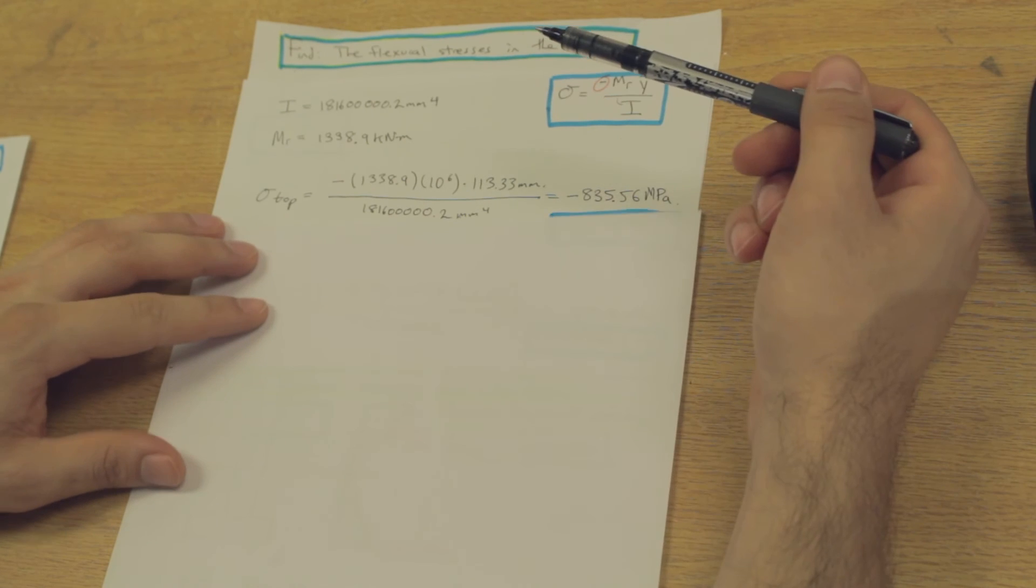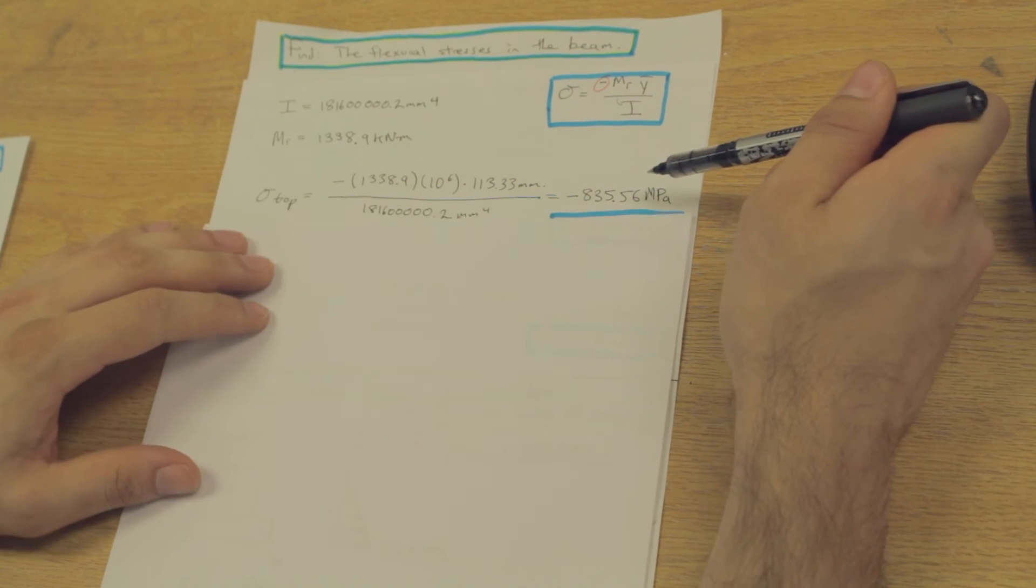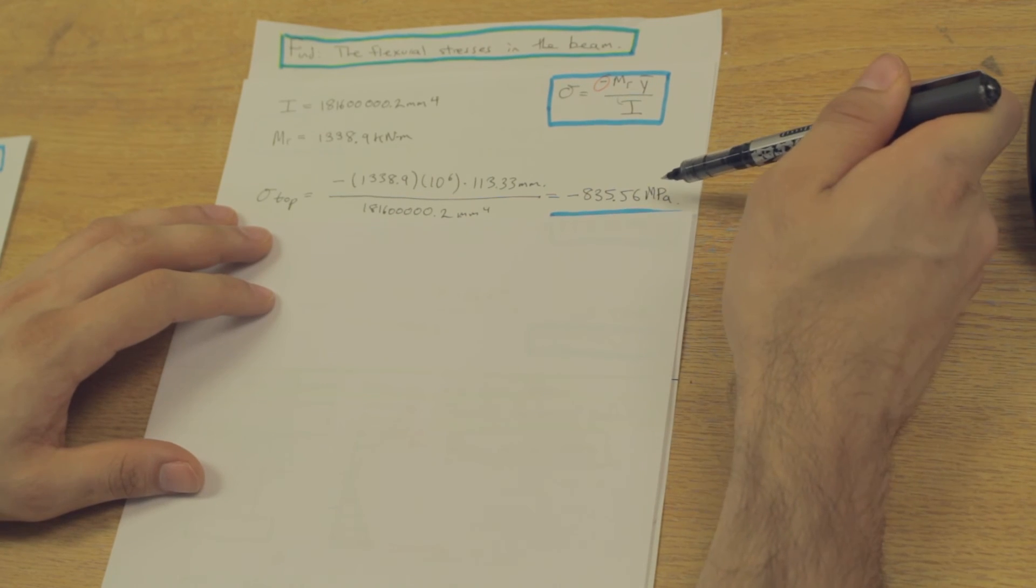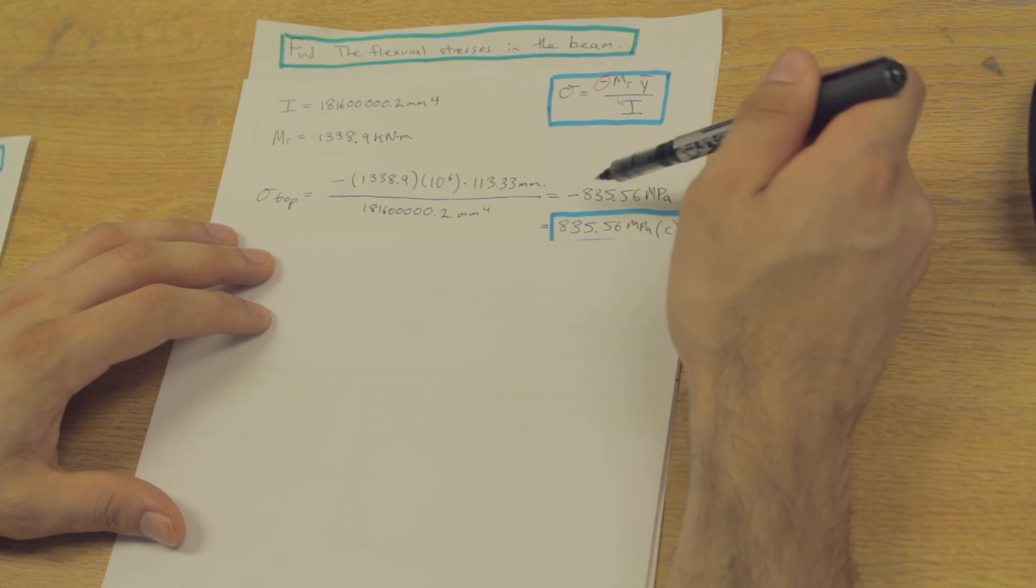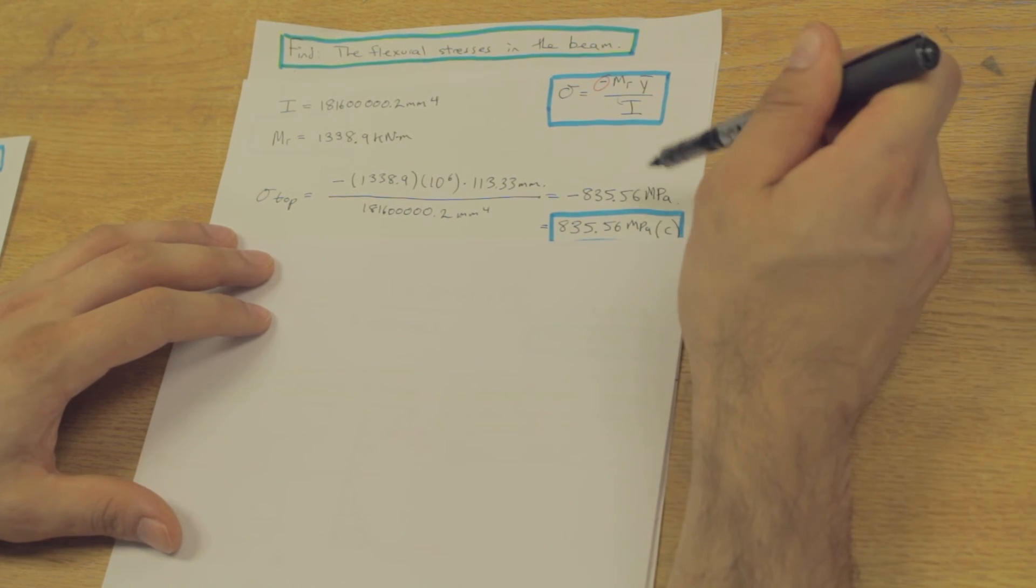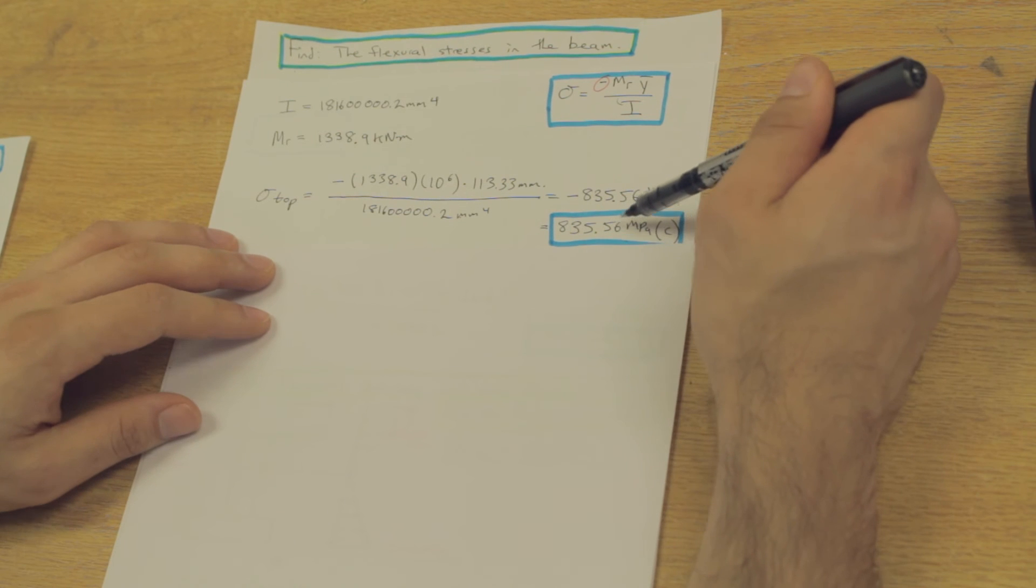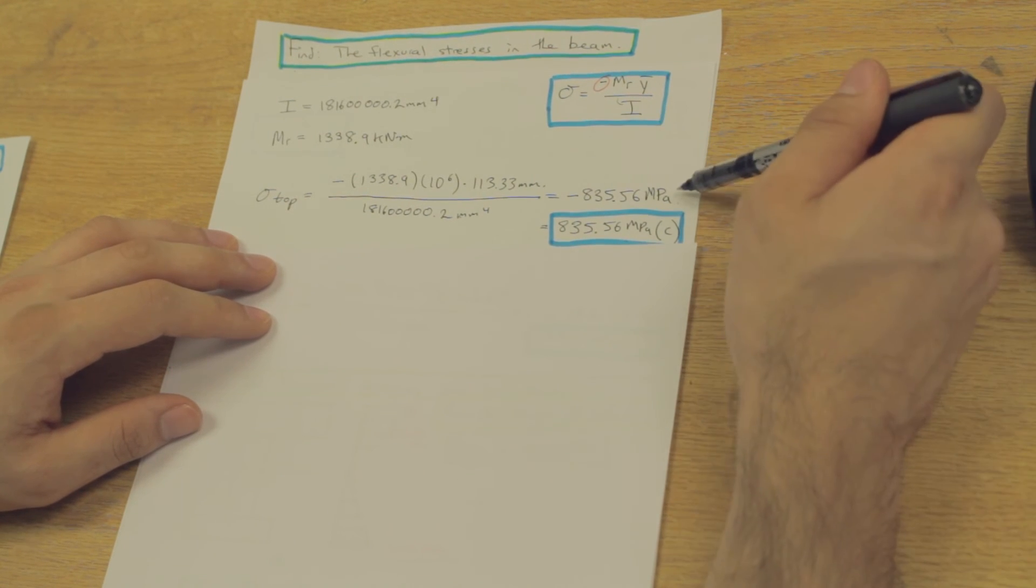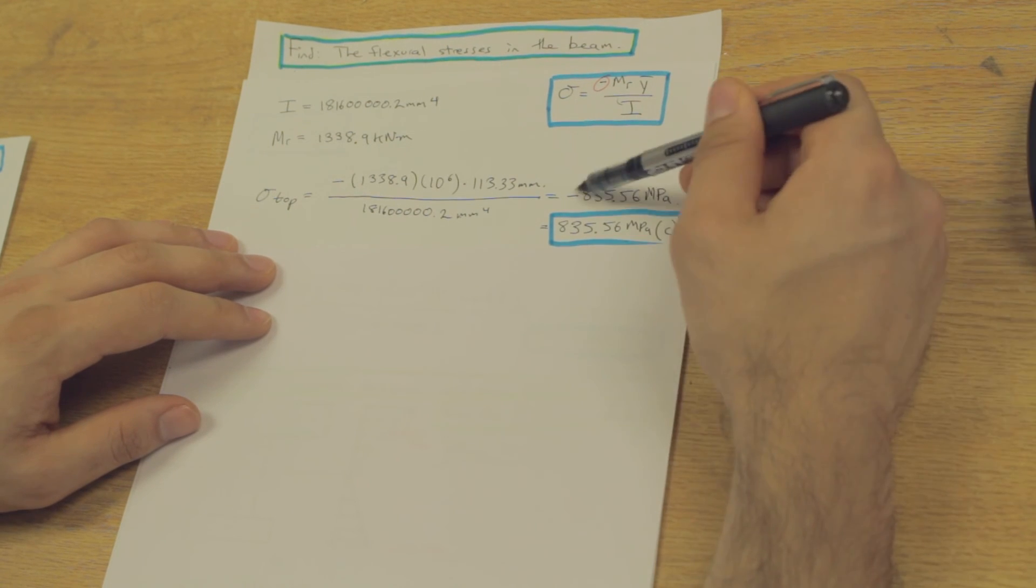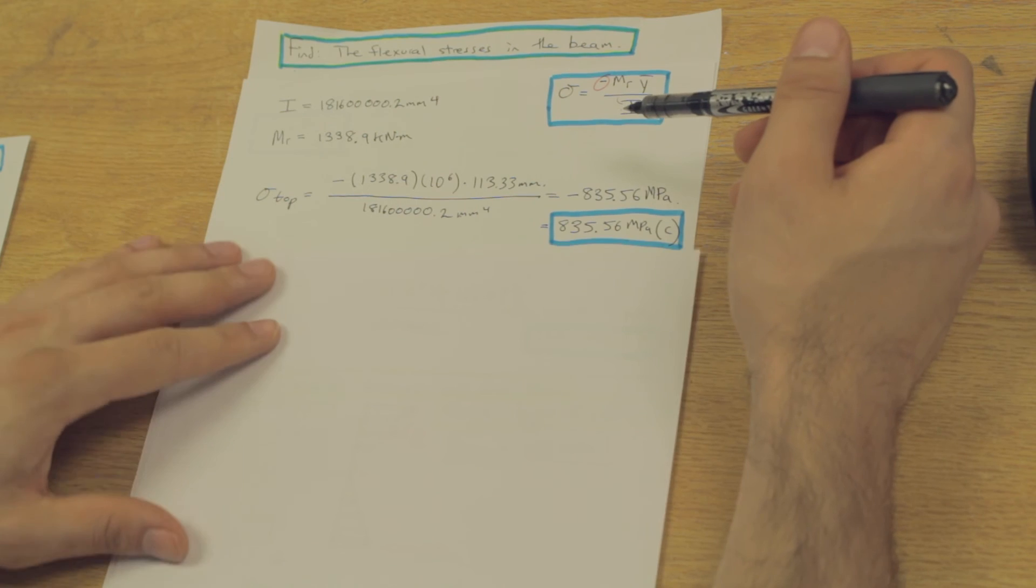And we are going to get a value of negative 835.56 megapascals, okay? Which implies that the top portion of the beam is in compression. And we are going to write that as positive 835.56 megapascals compression. We're going to put the compression sign there. Don't put the compression sign here, because negative compression would imply that it's in tension, and we don't want to imply that because that would be incorrect.